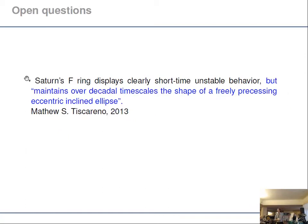This is very nicely summarized in this quotation: Despite the fact that the Saturn F-ring has lots of short time scale instabilities, it maintains over decadal time scales the shape of a freely precessing eccentric inclined ellipse. This is a point which is not understood, and this is what we are addressing more or less in this talk.